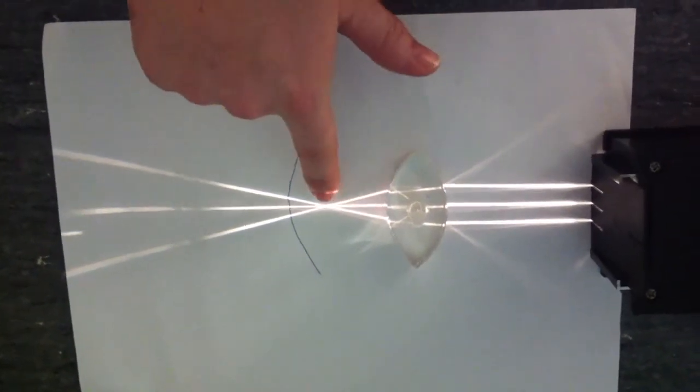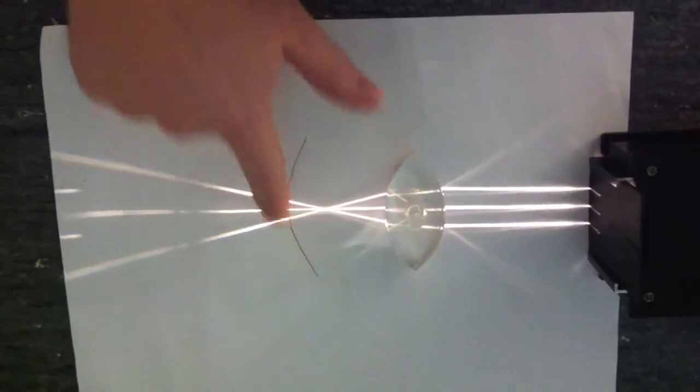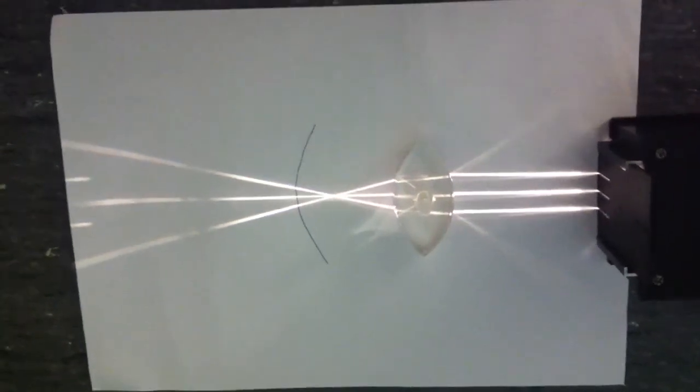Now the light is focused in front of the retina, so this person will be seeing very blurry.